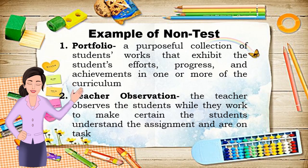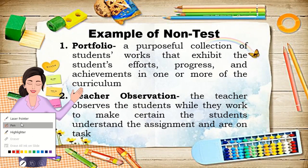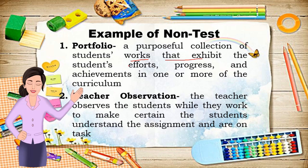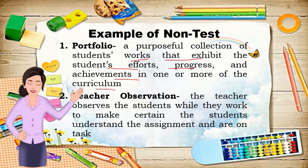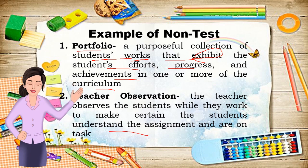Number one is portfolio — a purposeful collection of students' work that exhibits their efforts, progress, and achievements in one or more areas of the curriculum. Number two is teacher observation, where the teacher observes students while they work to ensure they understand the assignment or task — for example, in cooperative learning.